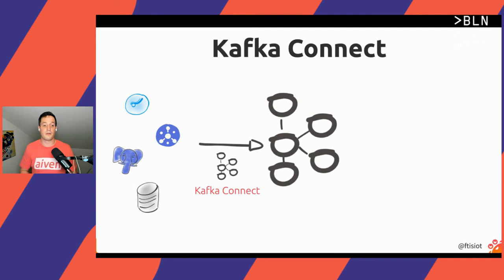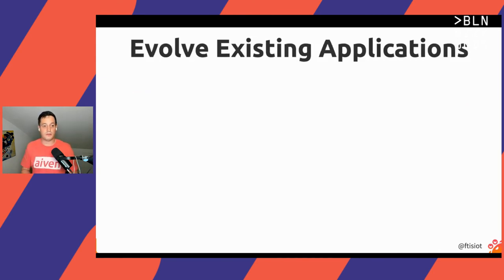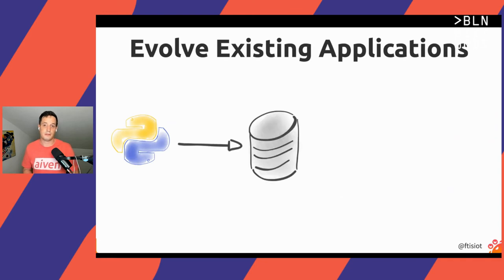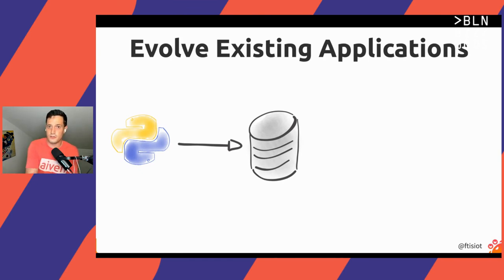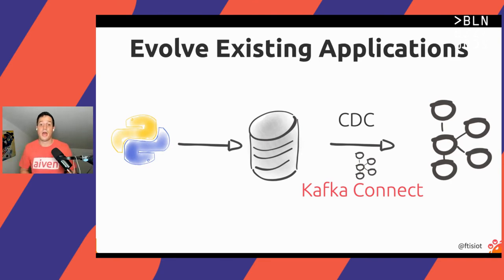That framework exists and is called Kafka Connect. With Kafka Connect, I can start integrating Kafka with any source or target available. For example, I have data in a Postgres database, Cassandra, or Google PubSub — I can use Kafka Connect to ingest that data into topics. On the other side, I have data stored in Kafka topics and want to send it to another technology in my company's ecosystem. Kafka Connect also enables you to evolve existing applications.